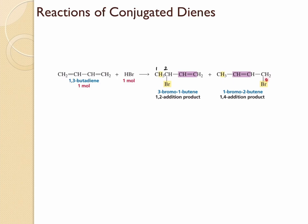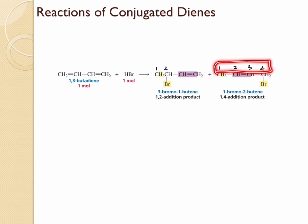In 1,4-addition, the bromine gets added to the fourth carbon relative to the first carbon. Numbering the carbons 1, 2, 3, 4, you can see the hydrogen was added to carbon 1 whereas the bromine was added to carbon 4. Note that these numberings have nothing to do with IUPAC nomenclature.